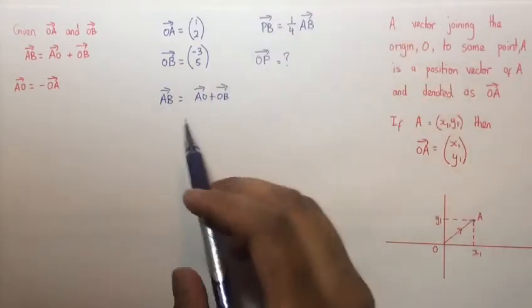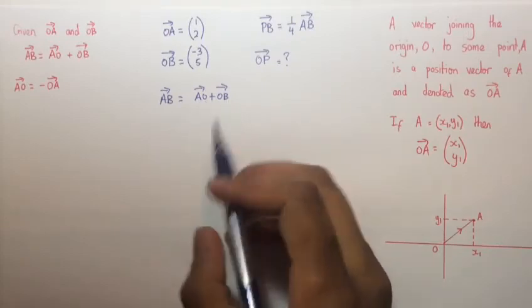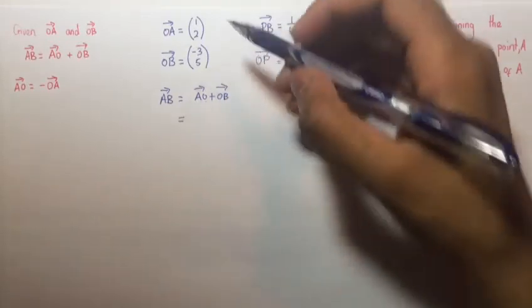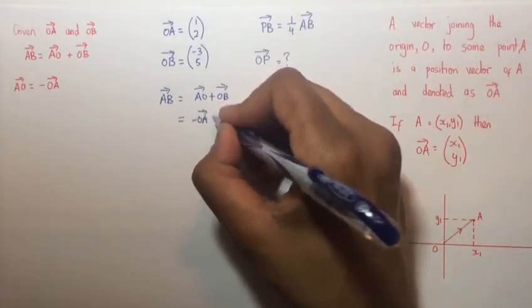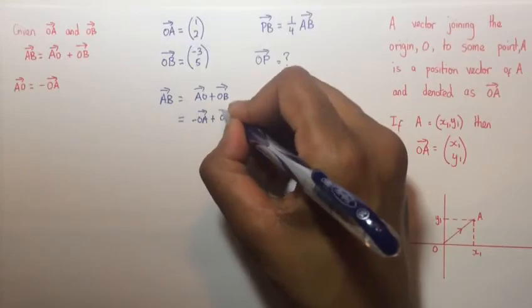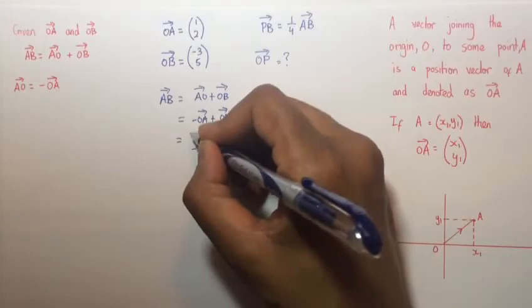So therefore our vector AB is equal to AO plus OB. A simple way to remember this is think of the middle O's as cancelling to leave vector AB. And that is equal to AO is the negative of vector OA plus vector OB.